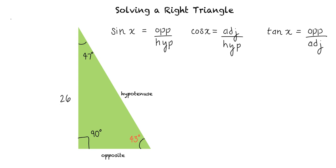We will set up our ratio like so. Tangent of 47 equals opposite over 26. And we will solve for the opposite side length. Our opposite side length equals approximately 27.9.